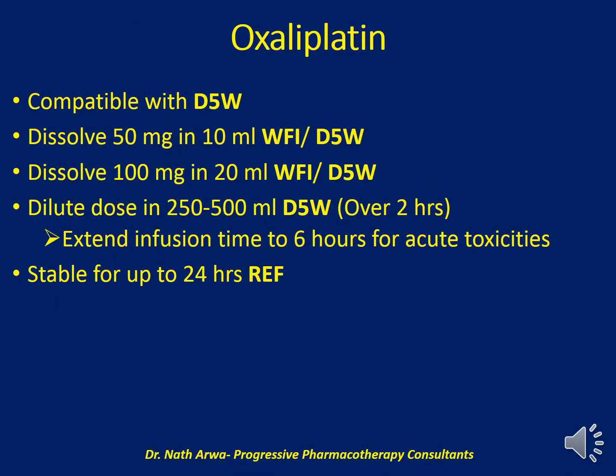Oxaliplatin is compatible with 5% dextrose — avoid the use of normal saline. The 50 mg vial should be dissolved in 10 ml of either water for injection or 5% dextrose, while the 100 mg vial should be dissolved in 20 ml of the same. Then the doses should be diluted in 250 to 500 ml of 5% dextrose. After homogenizing, infuse over at least 2 hours; extended infusion time to 6 hours can be used if acute toxicities occur. Such solutions after homogenizing are stable for up to 24 hours under refrigeration.